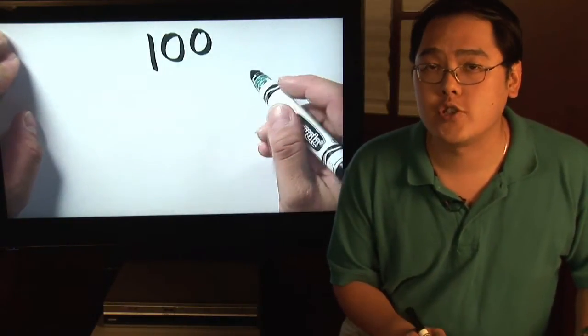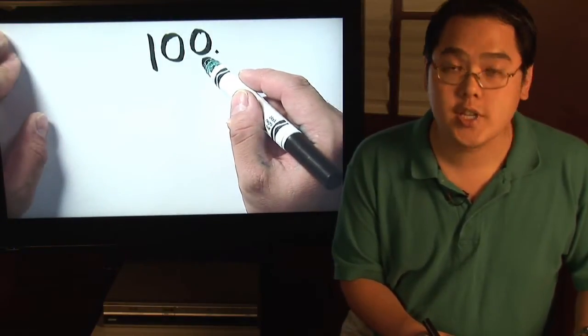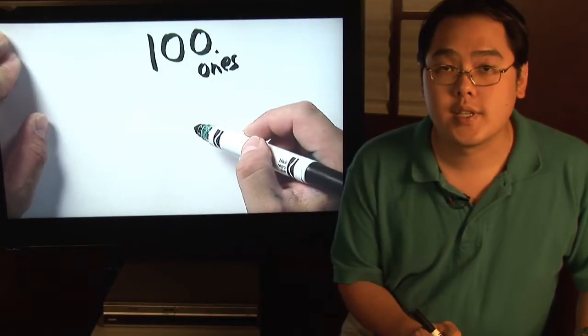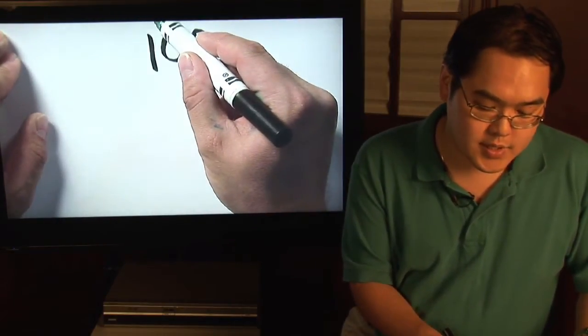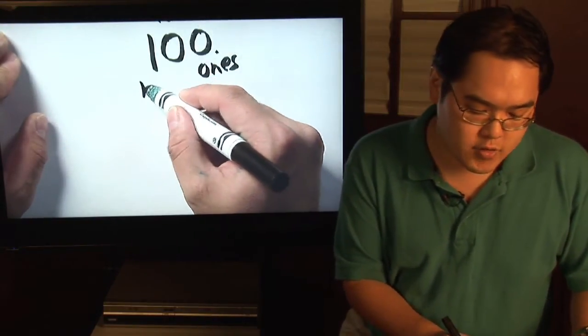What that allows you to do is teach them, well, the first digit is the ones place, the second digit there is the tens place, and of course, the third digit is going to be the hundreds place.